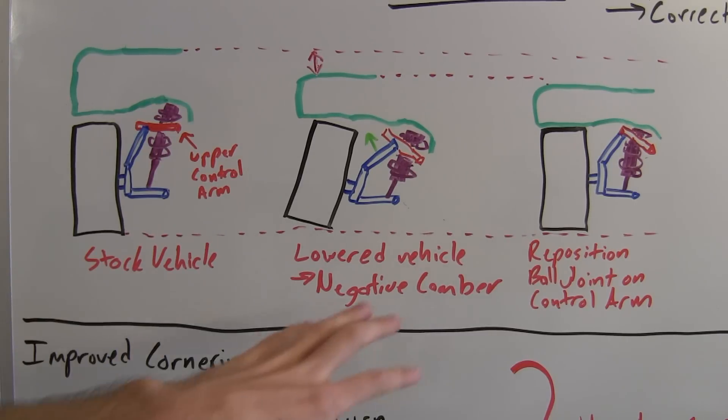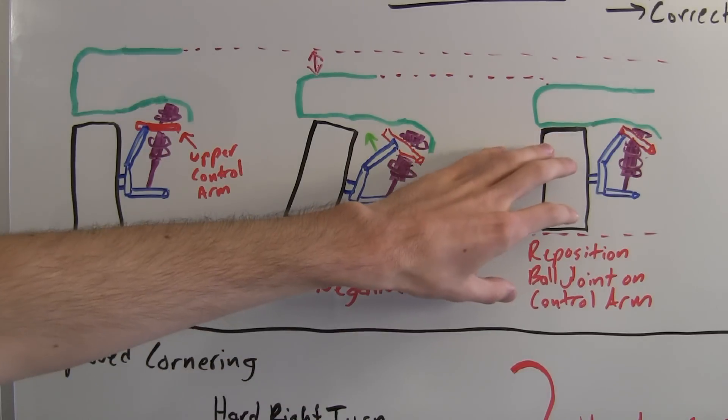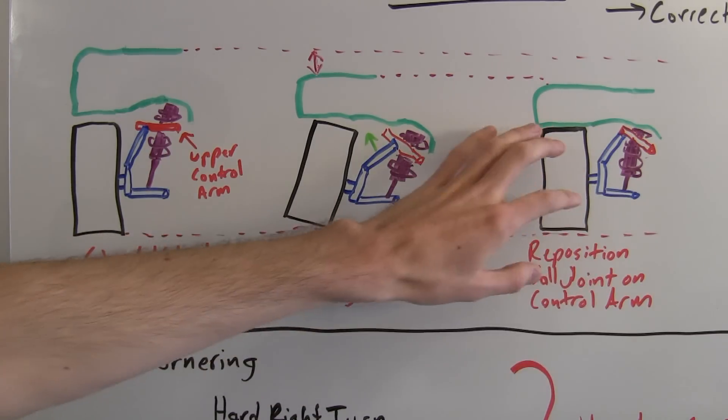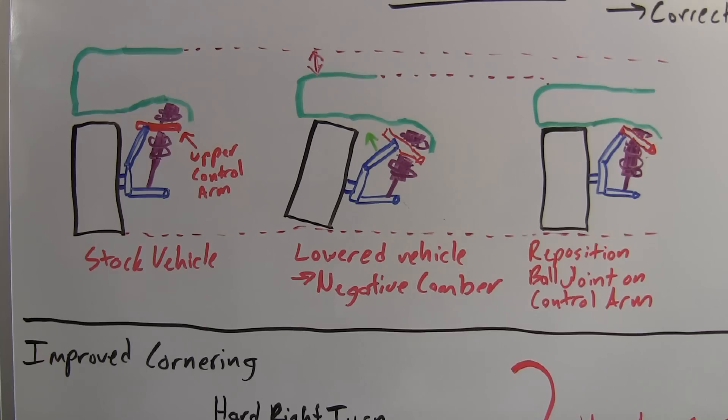So you've got your stock vehicle, your lowered vehicle with negative camber, and then you've repositioned the ball joint on the control arm so that you can have the stock camber adjustment.